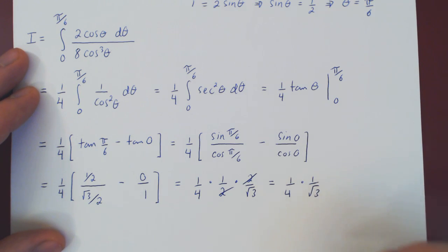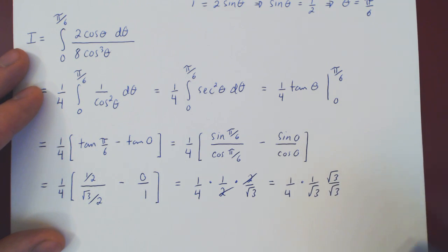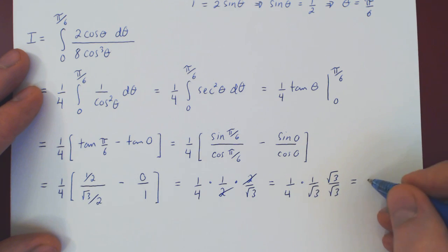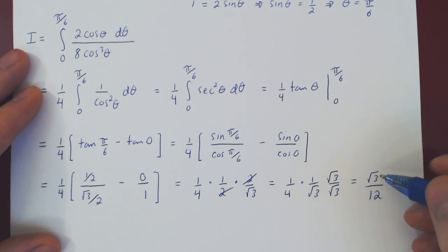We can rationalize by multiplying top and bottom by root of 3, which gives us, well on the top, root of 3, over root of 3 times root of 3 is 3, times 4 is 12. So we have finally root of 3 over 12. And that's it.